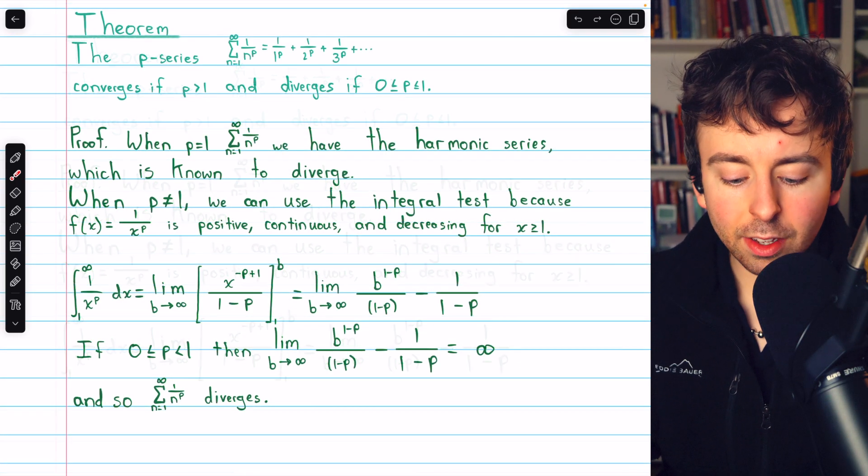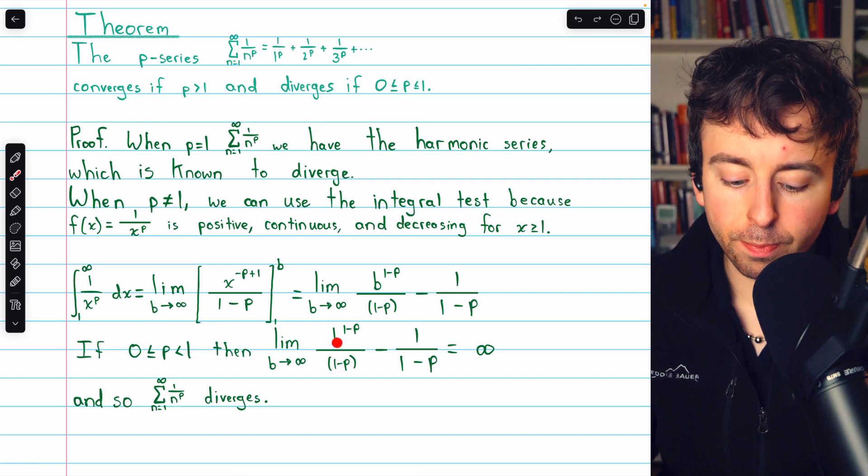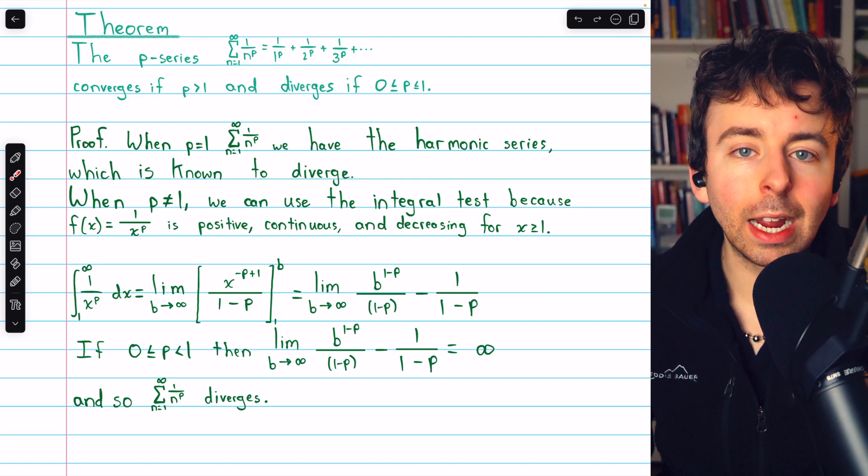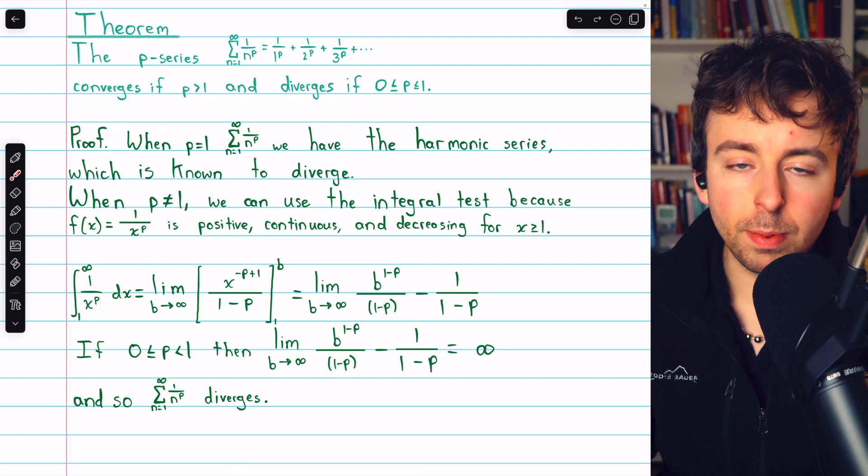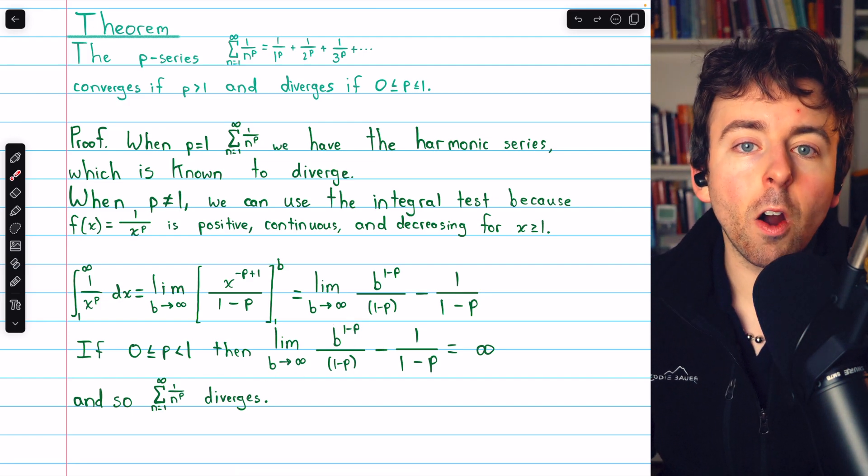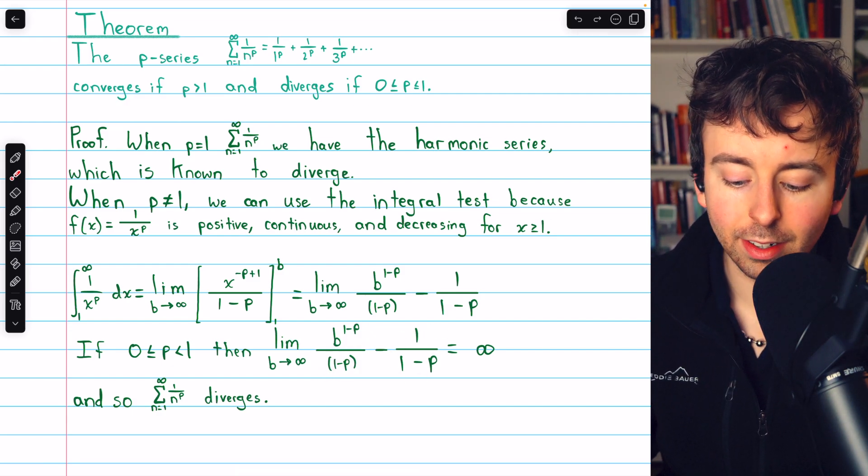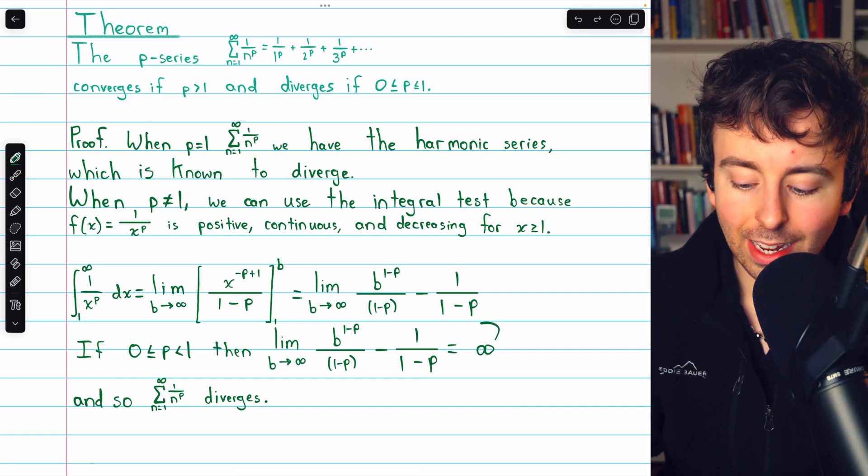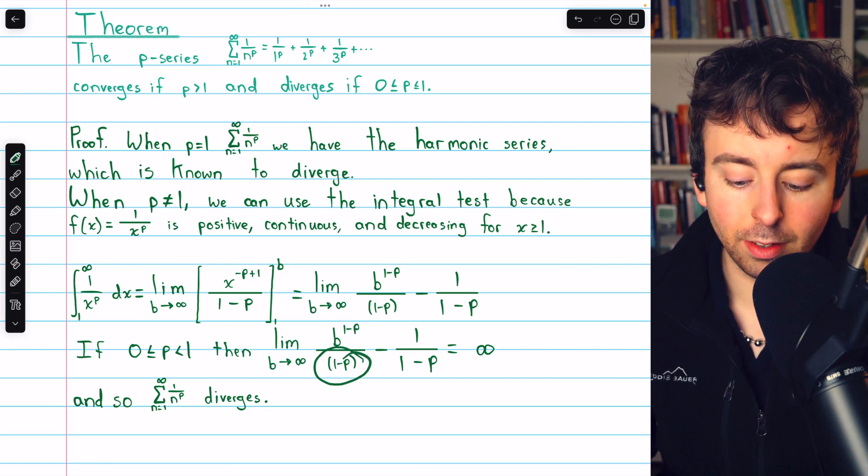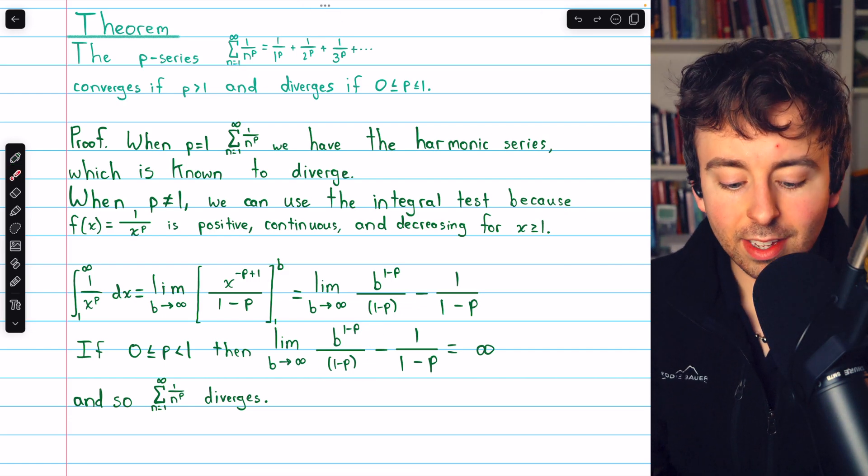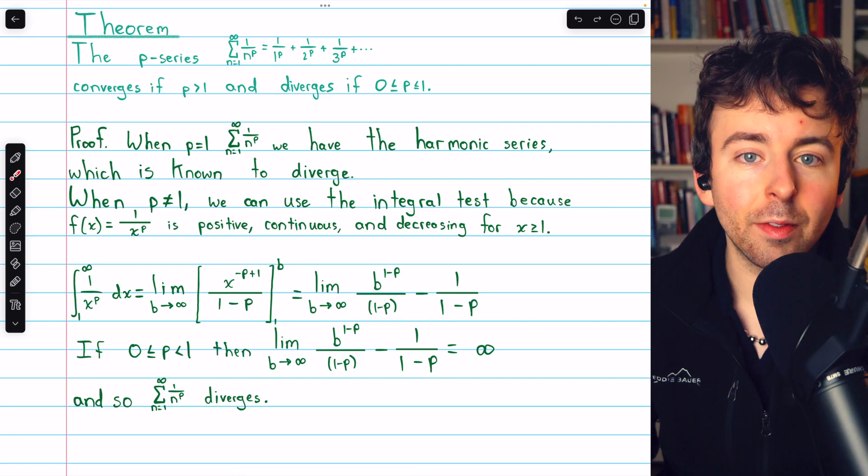So let's consider the two cases. In the case where p is between 0 and 1, not including 1, the power of b in the numerator is 1 minus some smaller number, so the power of b in the numerator is positive. Thus, as b goes to infinity, this numerator is going to get arbitrarily large. It's getting divided by some finite positive number, and we're subtracting something from it, but that's not going to change the fact that it diverges to infinity. Since this integral diverges when p is at least 0 and less than 1, the corresponding series diverges as well.